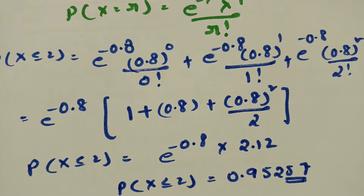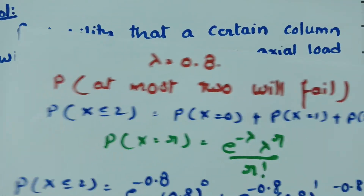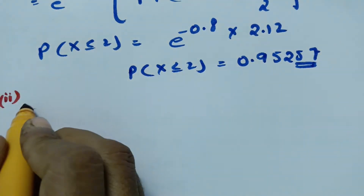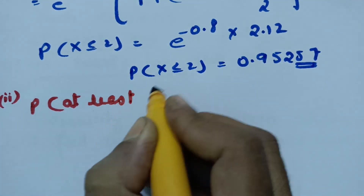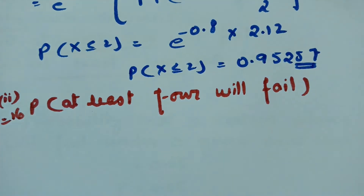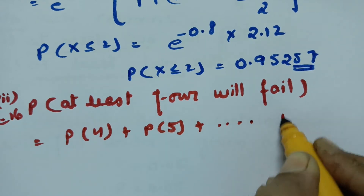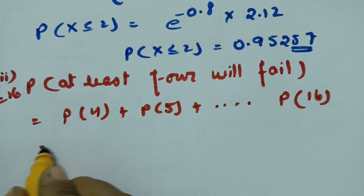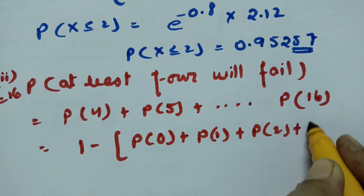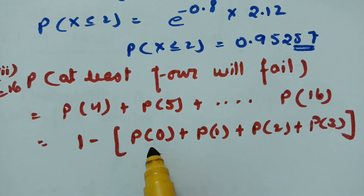For the next part — at least 4 will fail — the minimum is 4 and maximum is up to n=16. Instead of computing P(X=4) + P(X=5) + ... + P(X=16), it is easier to use the complement: 1 − [P(X=0) + P(X=1) + P(X=2) + P(X=3)], solving from 0 to 3.